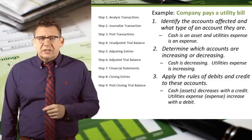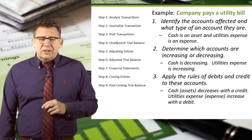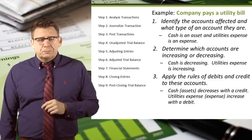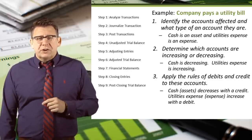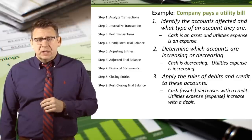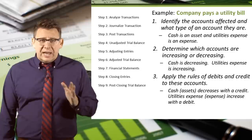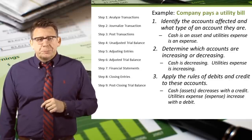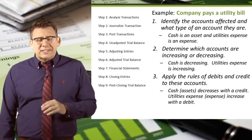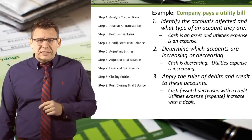Let's look at one more example, something a little bit different: a company pays a utility bill. Part one — the accounts are cash, an asset account, and utilities expense, an expense account. Part two: cash is decreasing because we have less cash after paying this bill than we had before. Utilities expense is increasing because we've incurred more expense after this transaction. Part three: cash is an asset and assets are decreased with a credit; utility expense is an expense and expenses are increased with debits.